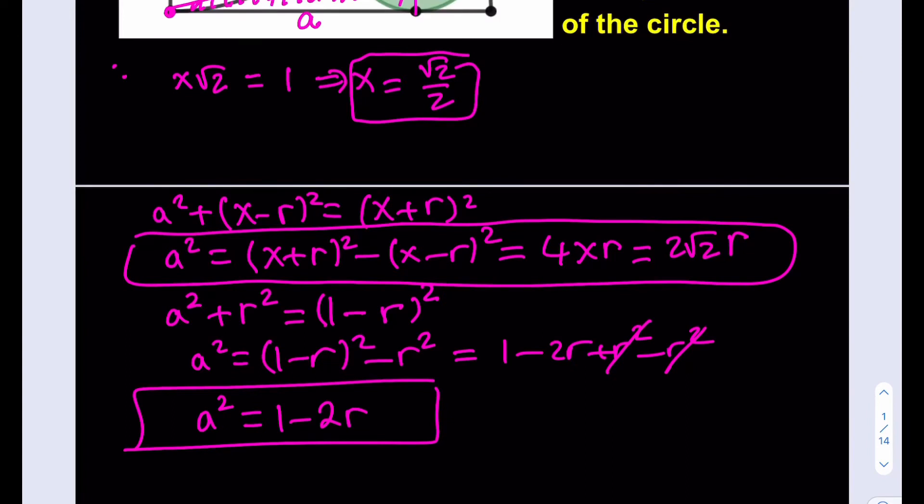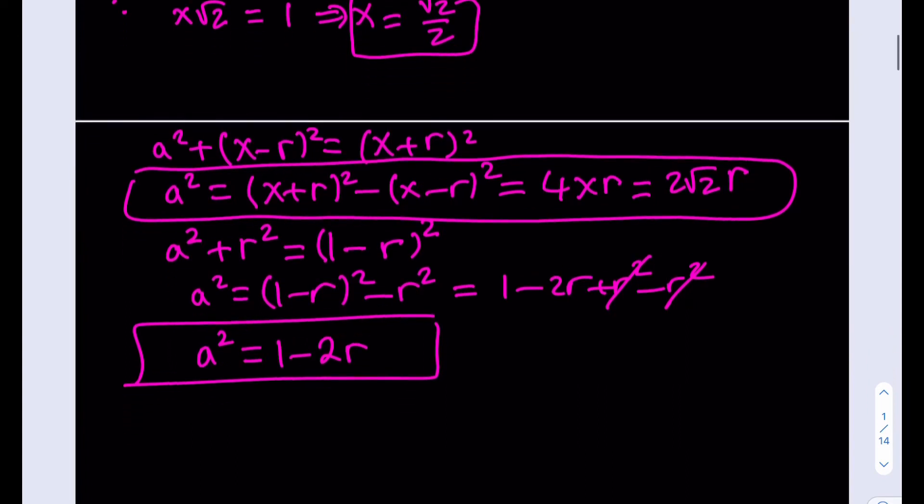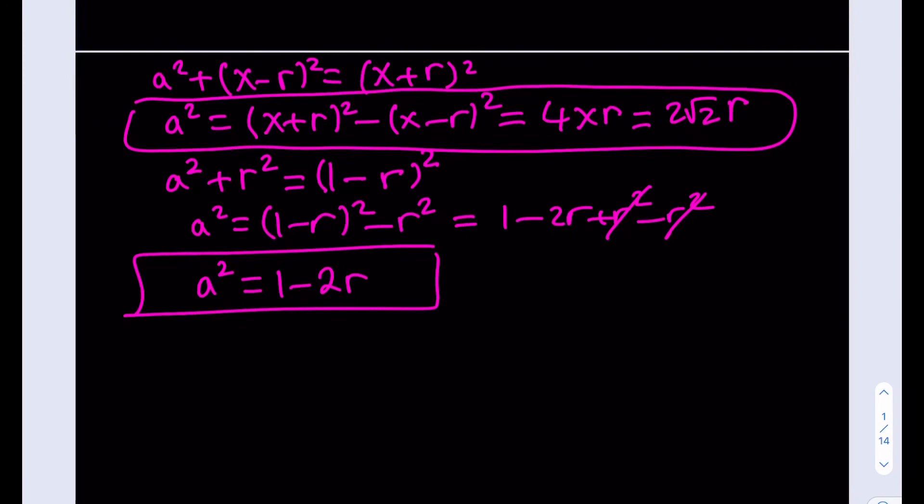If two things are equal to the same thing, then they're equal. Meaning that I can safely say 1 minus 2r is equal to 2 times root 2 times r.